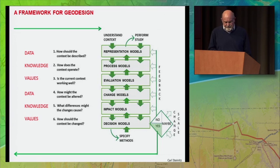The first question is answered by representation models. These are data, and they could be any kind of data. The second question, how does the context operate? These are process models, and they represent the knowledge that we have about how our environment works.